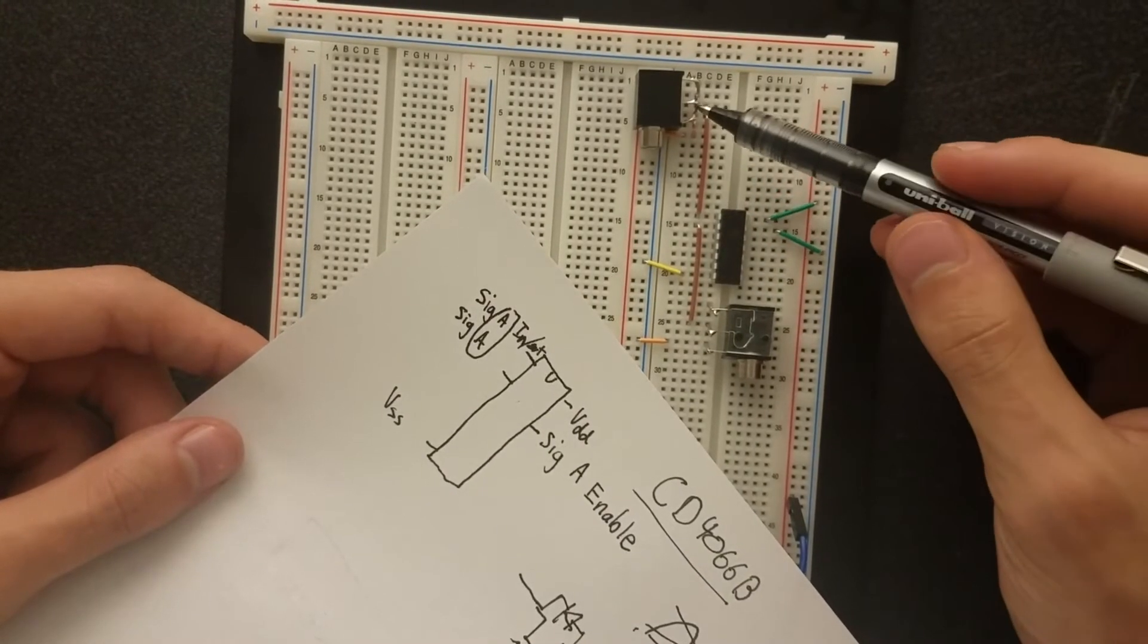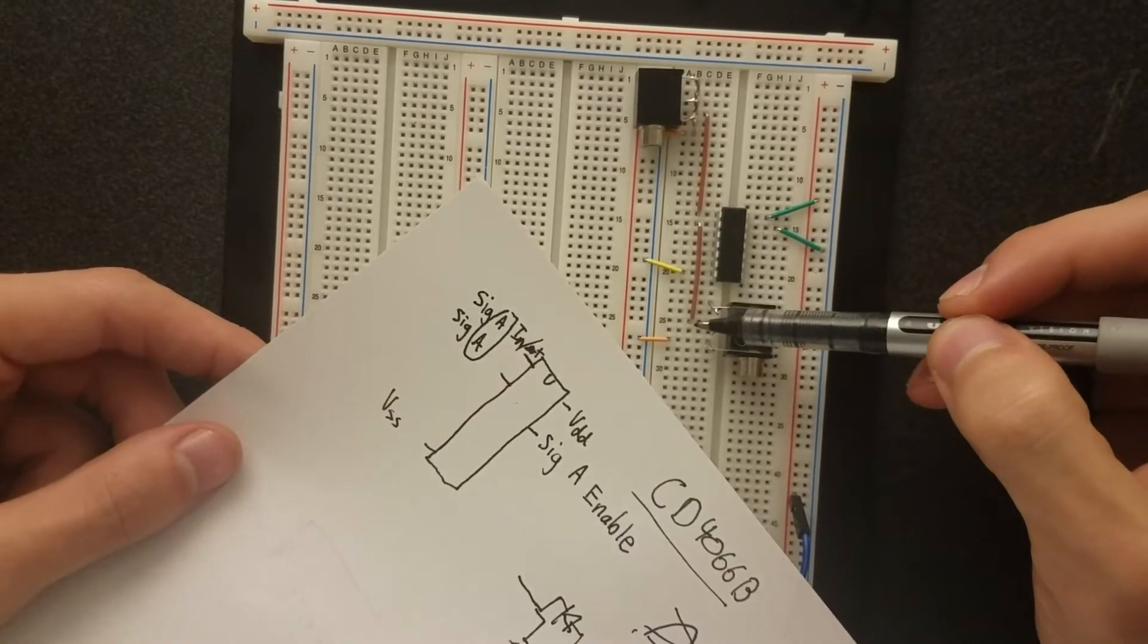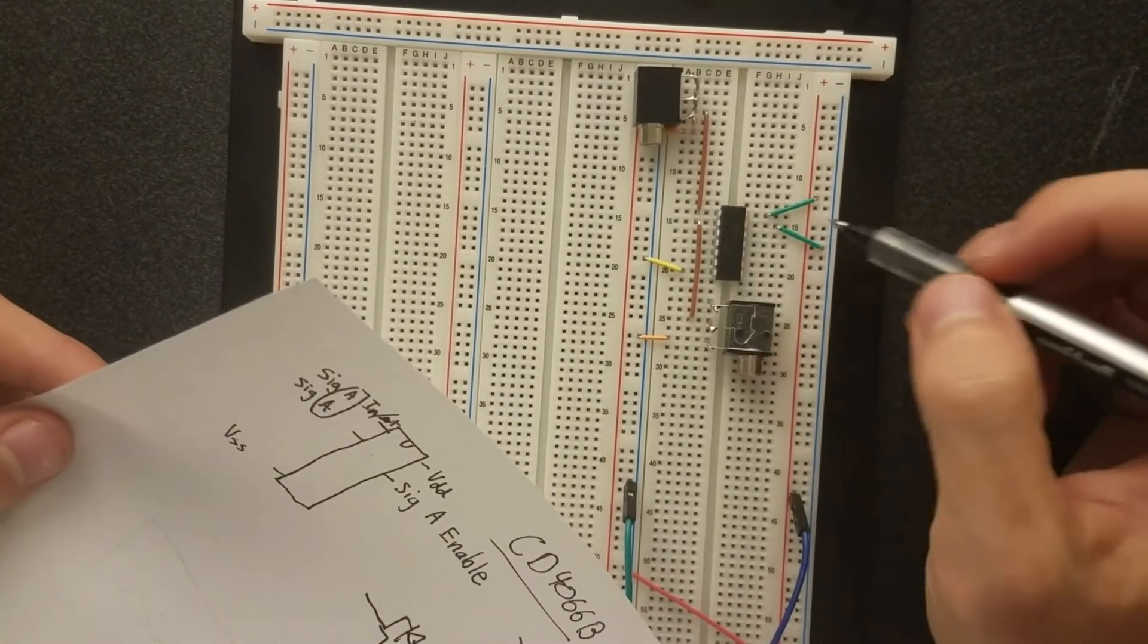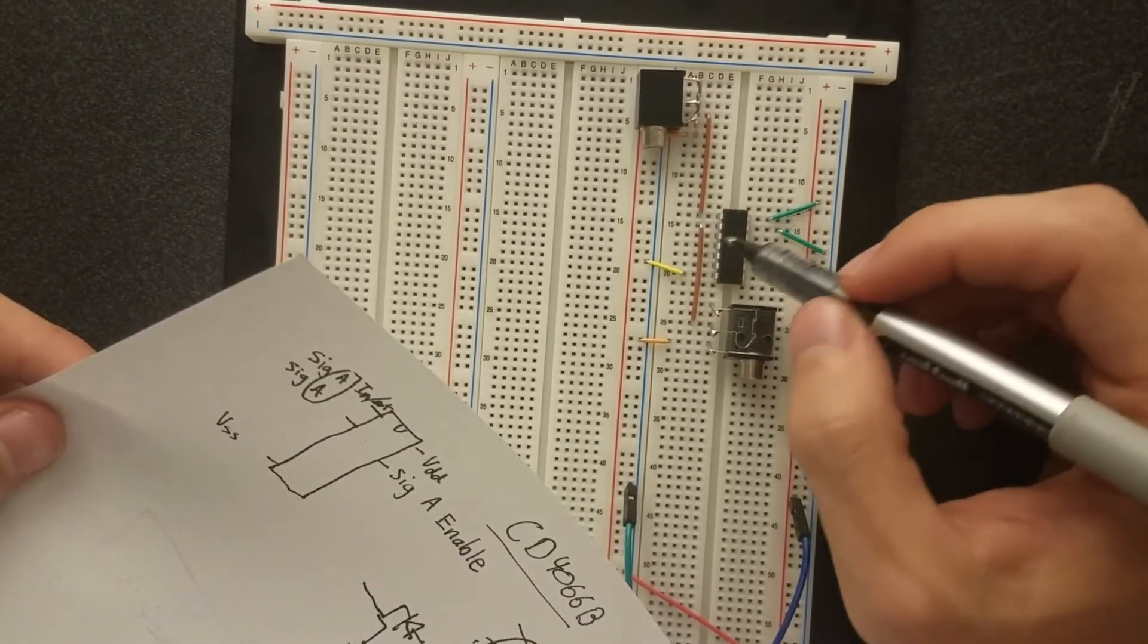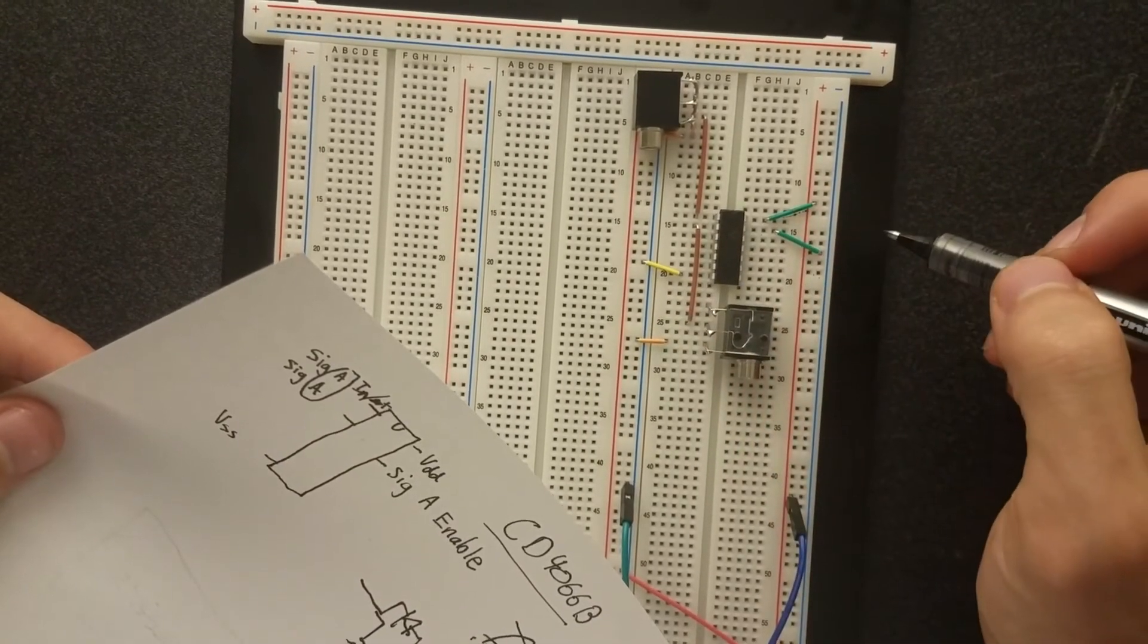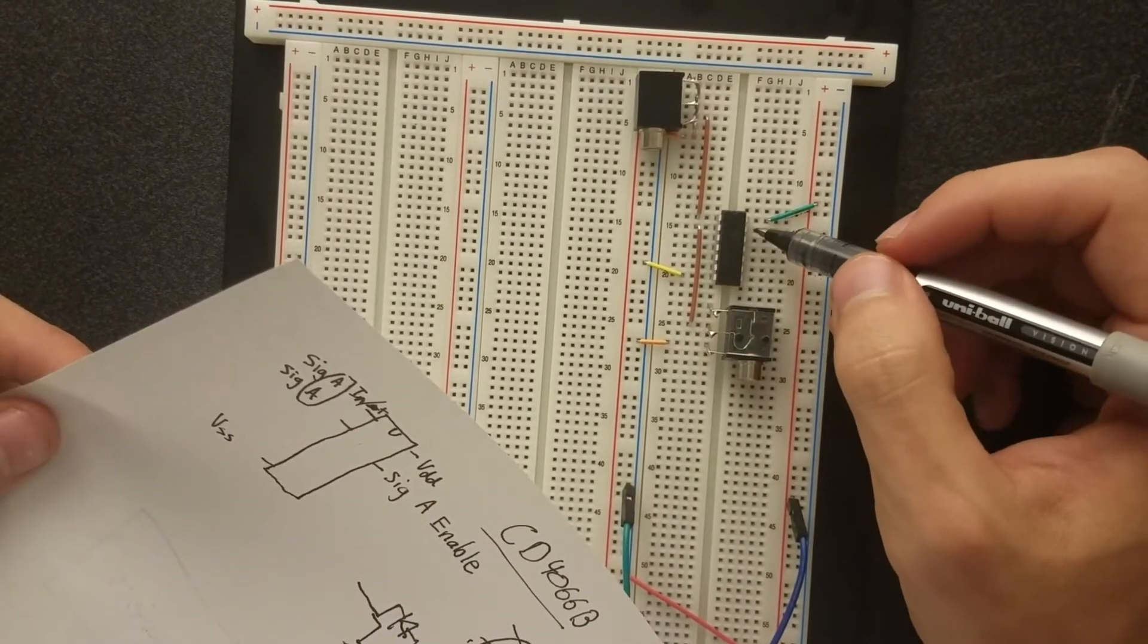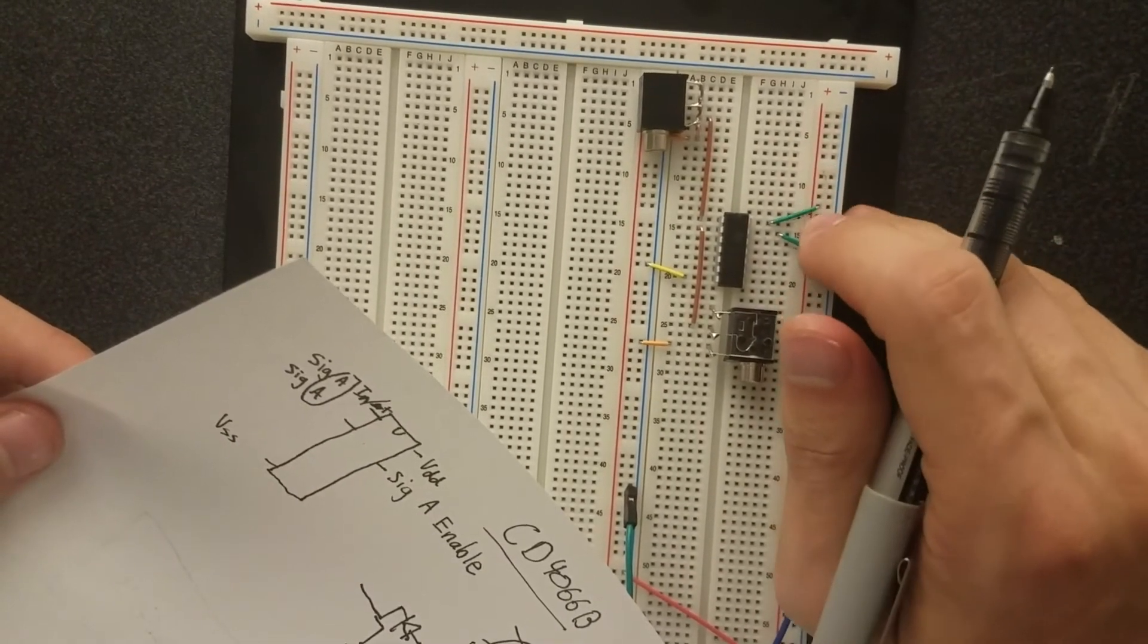And so, the audio signal will go through. It'll go into the chip. Then, it'll come back out, and it'll come down, and it'll go to this audio jack right down here. Okay, so, then I have the chip connected to power. That's, this one is VCC, and this is VSS down here. Then, this is the enable pin for channel A. So, by putting this to ground, it should mute it. And by putting it to the 5-volt rail here, it should pull it high.